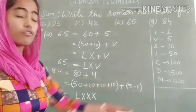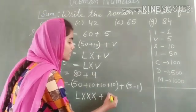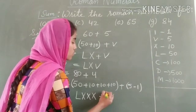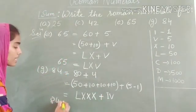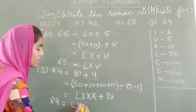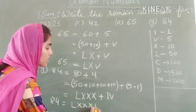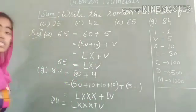And for 5 - 1, which is 4, we use IV. So our required answer for 84 will be LXXXIV. With this, our first problem is over.